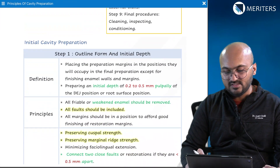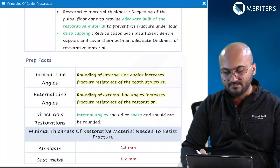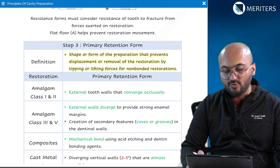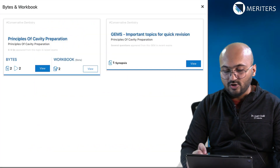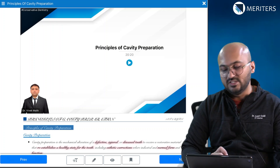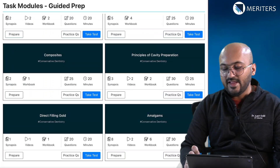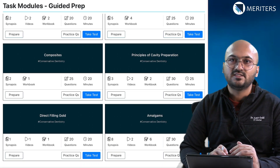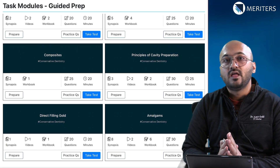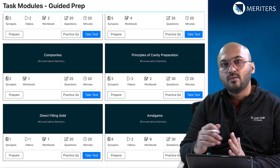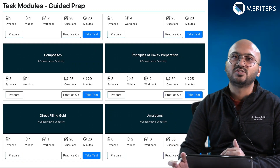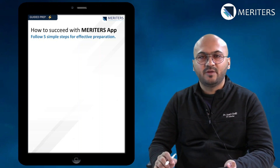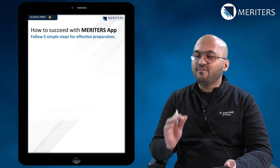Each task comes with educational content in the form of notes and videos, and then you can practice questions and take a test. For example, if you want to prepare principles of cavity preparation, you have the whole data in flowcharts and tables. Go through the data, go through the workbook — if you have the workbook yourself, even better. You can fill it in and use the illustrations to remember, watch video explanations, practice questions, and take tests. Do this for all tasks under this heading, then move on to the question bank.